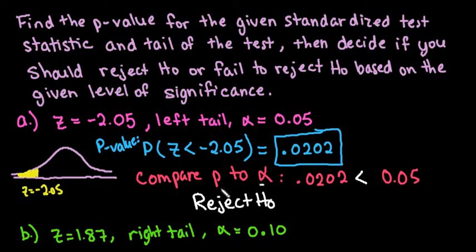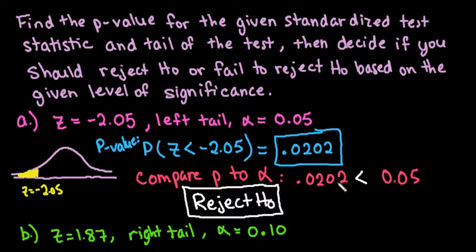If the p-value is greater than alpha, then we would fail to reject. So if it's less than or equal to alpha, we reject. If it is greater than alpha, then we fail to reject.